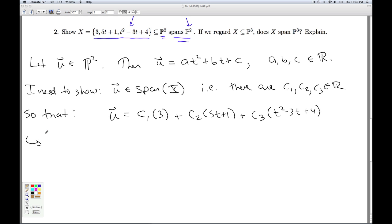In other words, I need to find c1, c2, and c3 so that 3c1 plus 5t plus 1c2 plus t squared minus 3t plus 4 times c3 equals at squared plus bt plus c. So for any given a, b, and c, I have to find the c1, c2, and c3 that will do the job.